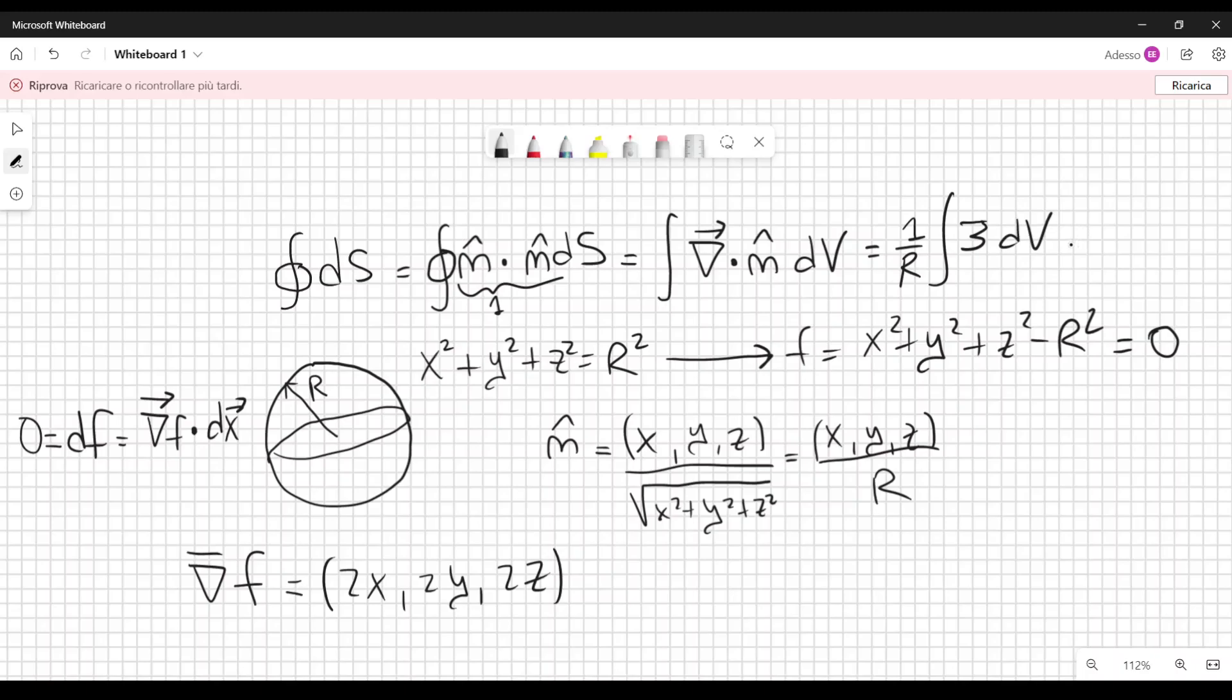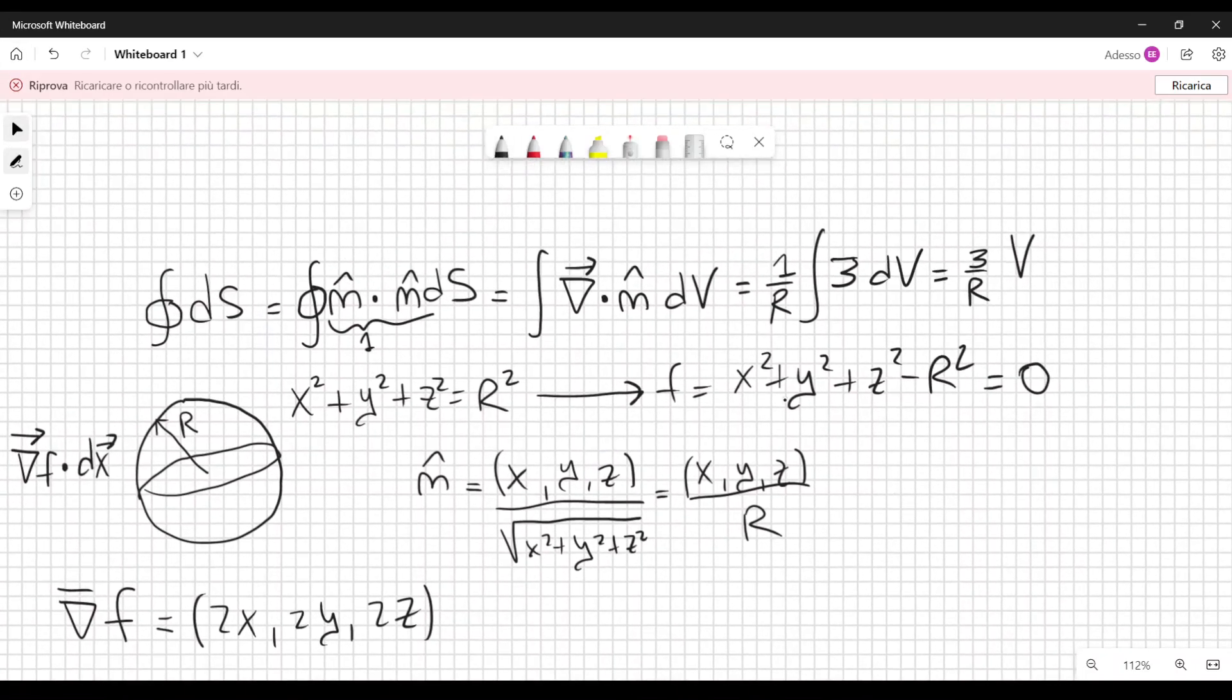dv, which is the infinitesimal volume, so I have 3 over R times the volume of the sphere. Well, this is very easy because we already know the volume of the sphere. I'm not going to calculate the triple integral. You can do it in spherical coordinates. We have 3 over R times 4 over 3 pi R cubed. And lo and behold, this is exactly equal to 4 pi R squared, which is the surface of the sphere that we wanted to calculate.